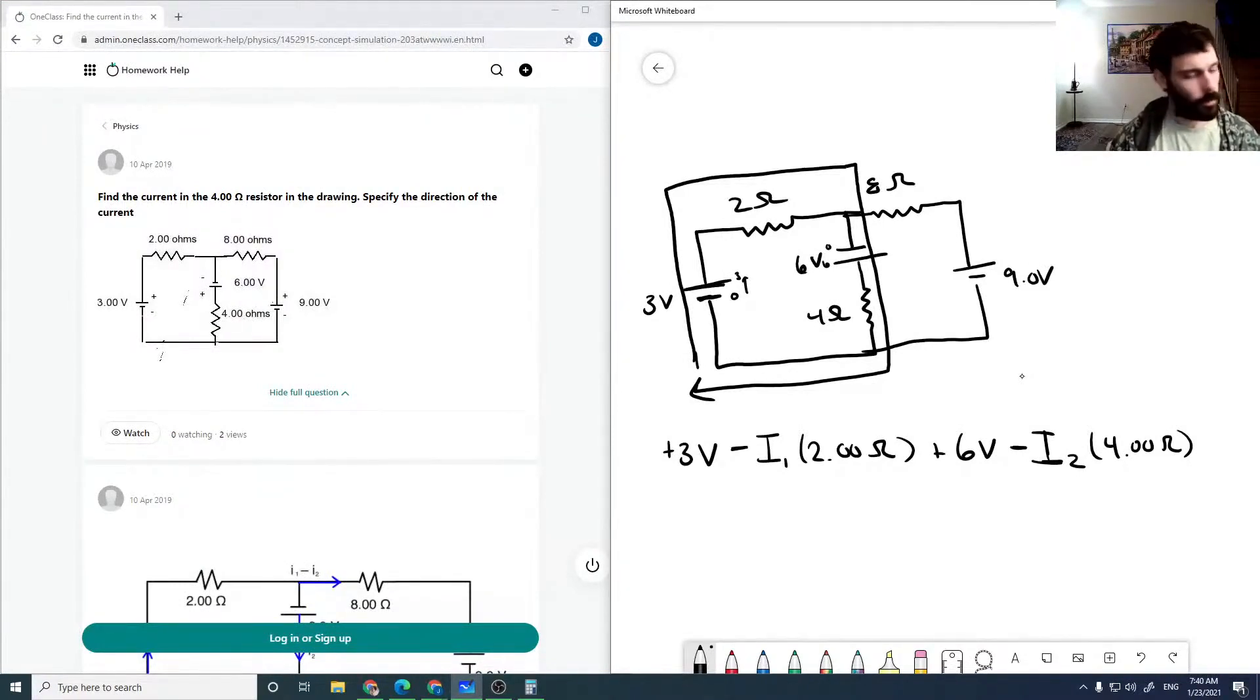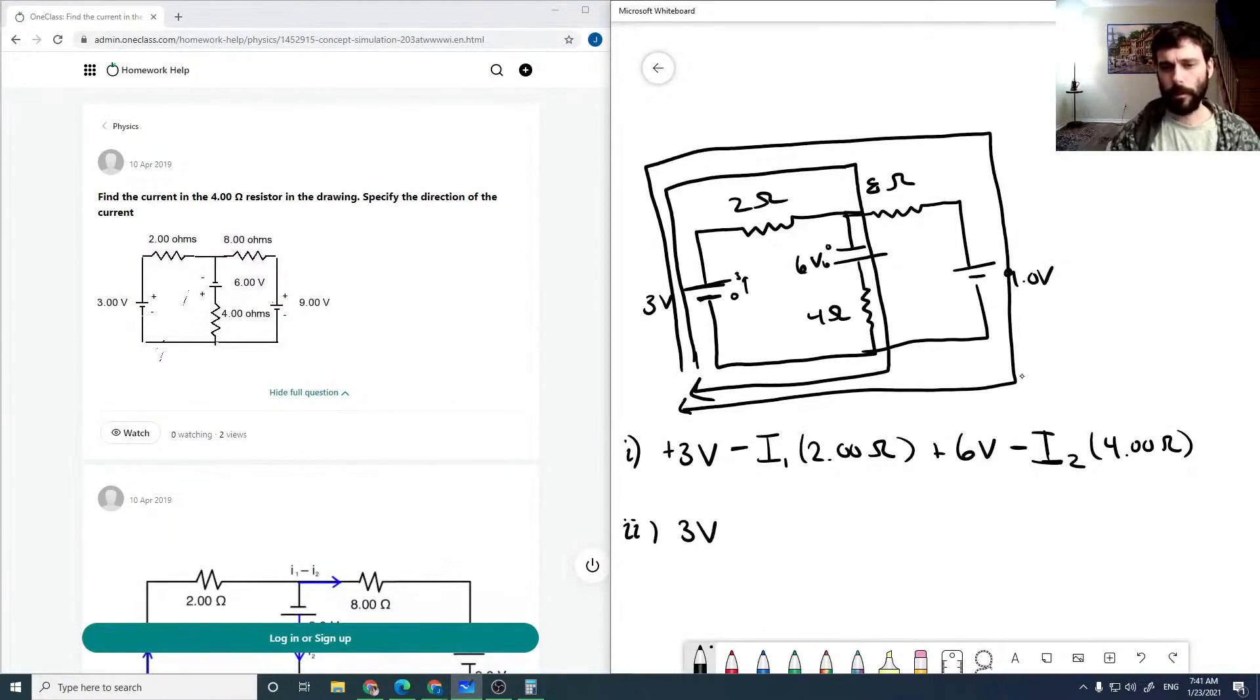So now for our second loop, I'm going to draw this one. And so now I've got, so our first loop for our second loop, we've got 3 volts minus our I1 times our 2 ohms. And now we're dropping a third current across the 8 ohm resistor. And we're going from 9 to 0. So we're dropping 9 volts across that battery. And these should both equal 0, I should have said. And so then there's our 2 loops.